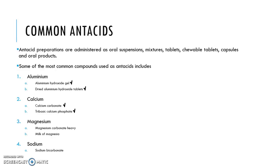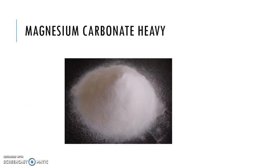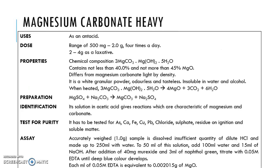The next common antacid type is magnesium, which includes magnesium carbonate and milk of magnesia. This is the monograph for magnesium carbonate.